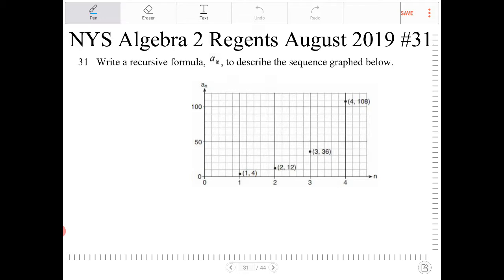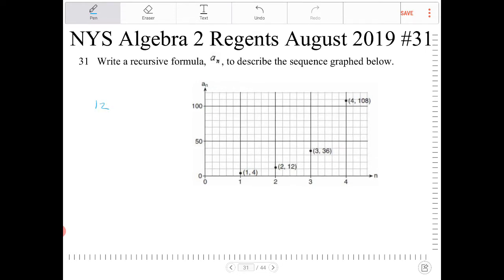So to confirm whether or not this is geometric, let's try to determine the common ratio. So if I take the successive terms, so I take 12, divide by 4, will this ratio hold? 36 to 12.